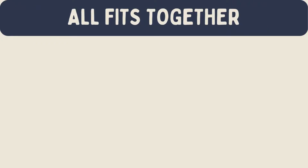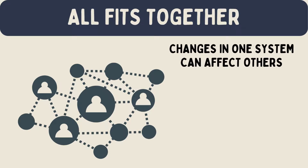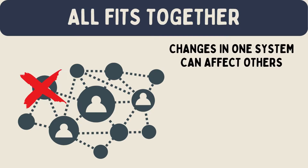All five systems are connected. They work together to influence a person's development. Changes in one system can affect others. For example, a change in the macrosystem, like a new law, can change the exosystem, which might then affect the microsystem.